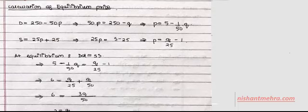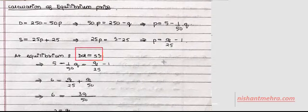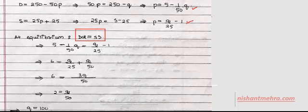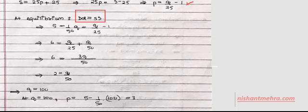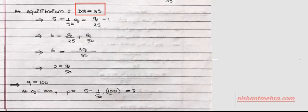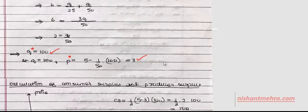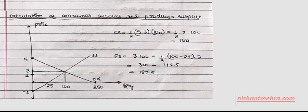For the numerical example with linear demand and supply functions, first find the equilibrium by converting both functions in terms of price and equating demand equal to supply. Solving gives Q-star equals 200. Substituting back into either the demand or supply function yields P-star equals 3. So the equilibrium price is 3 and the equilibrium quantity is 100.